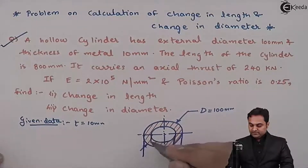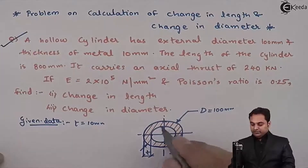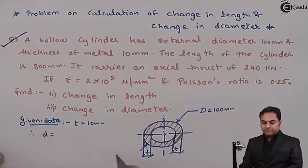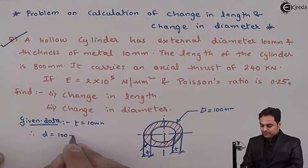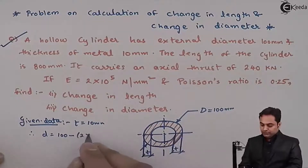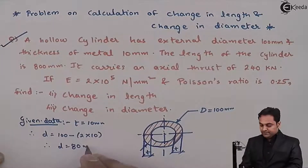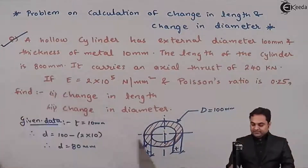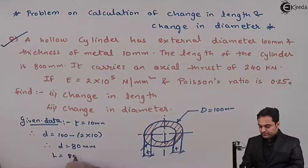When this thickness is given, we can calculate the internal diameter. Therefore, internal diameter d = D − 2t = 100 − 2×10 = 80 mm. Next, the length of the cylinder is L = 800 mm.